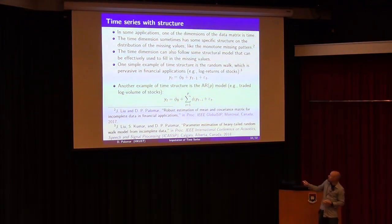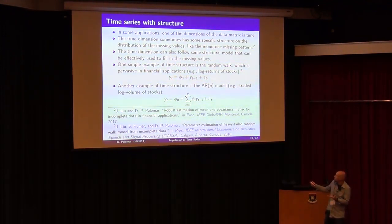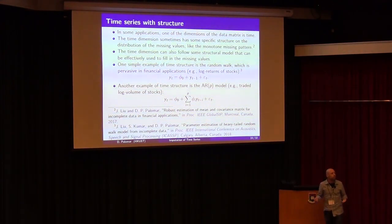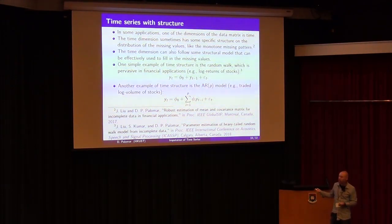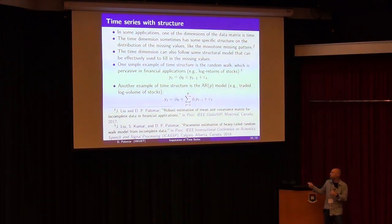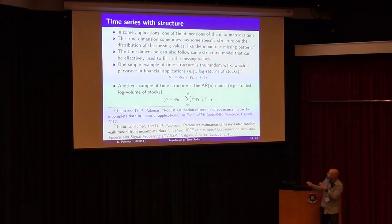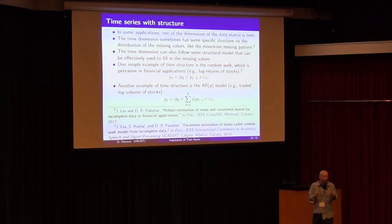Basically, the idea is that y_t is the time series and there is some structure. For example, in a random walk, y_t equals y_{t-1} plus some innovation. There are many other models, like an AR model, where y_t depends on the past few values plus some random innovation. So clearly, if one of these values is missing, you can have a good guess on how to fill it in.